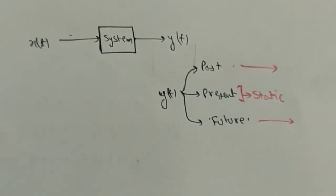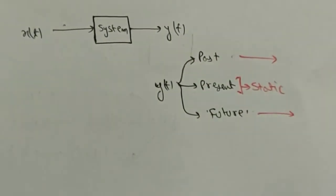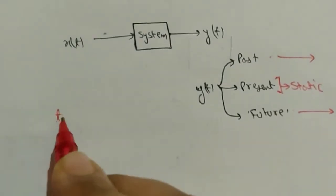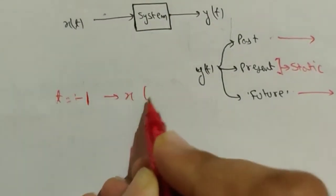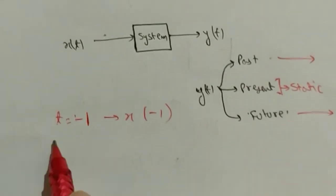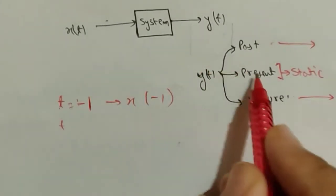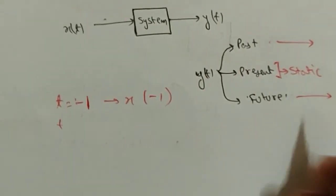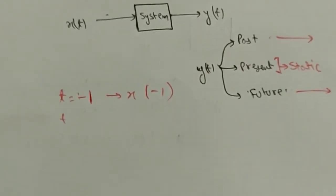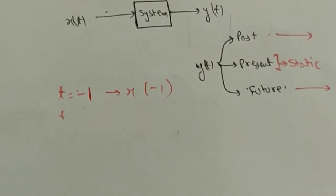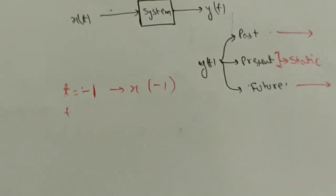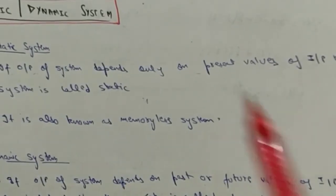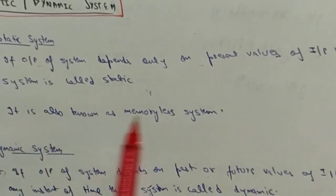A static system does not depend on past or future values because it can't remember past values. For example, if at t = -1 there was an input x(-1), the system can't remember this. So static systems are also called memoryless systems, and dynamic systems are also called systems with memory.